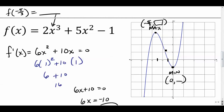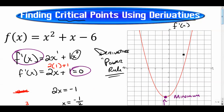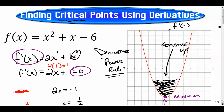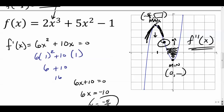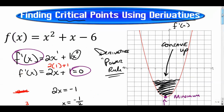Next we'll move into concavity. A graph that can 'hold water' is concave up, and sometimes graphs change concavity — where one part holds water and another part doesn't. That's not a first derivative discussion; it's a second derivative discussion. The point where the graph changes concavity is called the inflection point. That's a brief overview of critical points — thanks for watching.